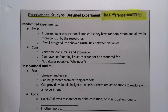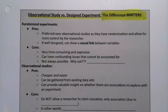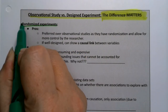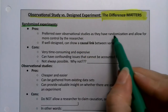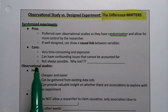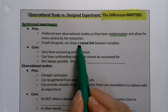Randomized experiments are preferred over observational studies because they have randomization, and randomization is nothing to slouch at. Having randomization allows for more control by the researcher — being able to manipulate things, control for variables like lurking variables, confounding variables, and so on. If it's well-designed, it can show a causal link.